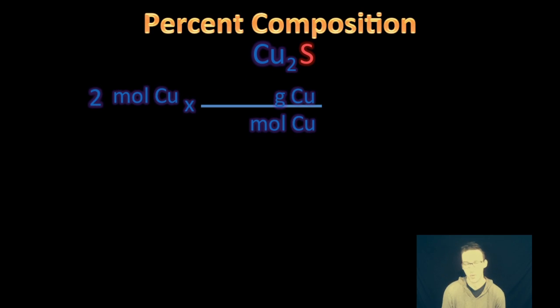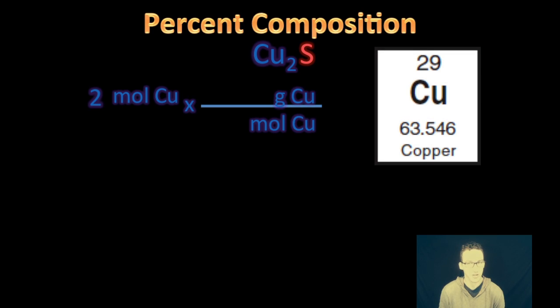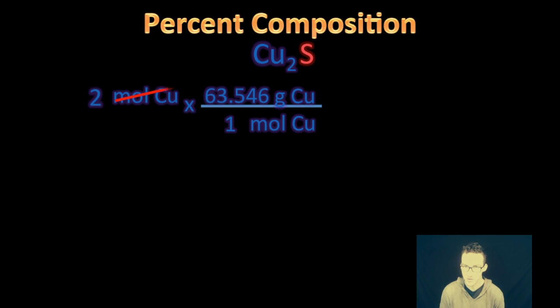We first need to know what is the mass of copper in one mole of that compound. Well, for every one mole of copper two sulfide, there are two moles of copper. And therefore, if I want to figure out the mass of just the copper in that compound, I have to go to my magical periodic table of the elements. As you look at the molar mass there, one mole of copper will be 63.546 grams. Therefore, the mass of two moles of copper in that one mole of compound is going to be 127.092 grams of copper.